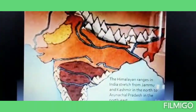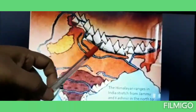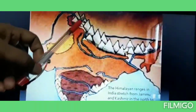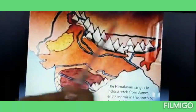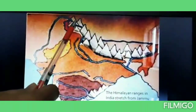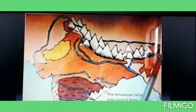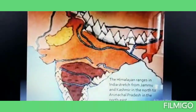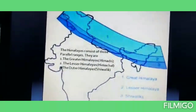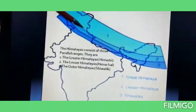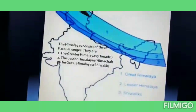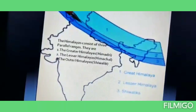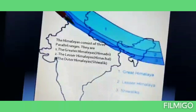The Himalayas range in India stretches from Jammu and Kashmir in the north to Arunachal Pradesh in the northeast. The Himalayas consist of three parallel ranges: number one is the greater Himalayas, called Himadri; number two is the lesser Himalayas, called Himachal; and number three is the outer Himalayas, called Shivalik.